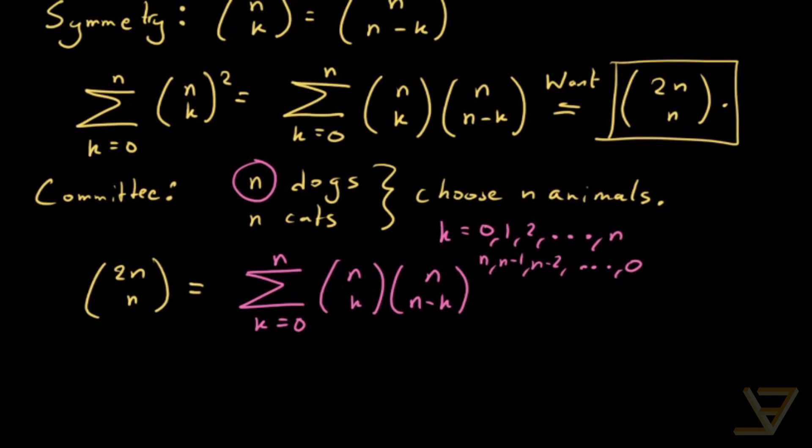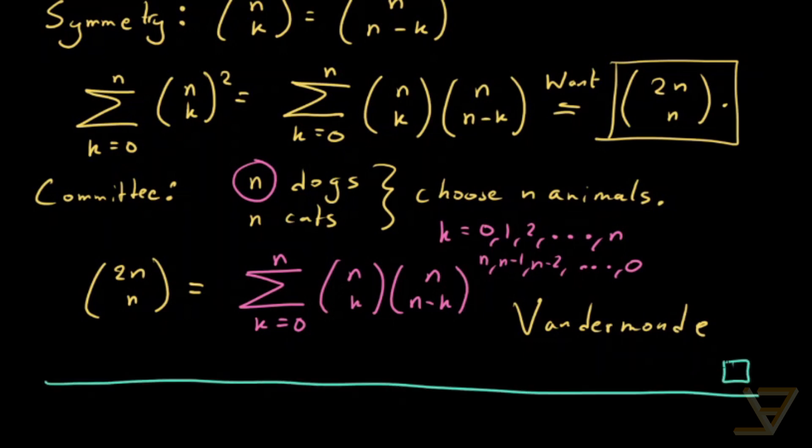And if you're wondering whether this generalizes, it does. We can replace one of the n's with an m. And that's called Vandermonde's identity. And that's going to be the subject of a future video. Thanks for watching and I'll see you next time.